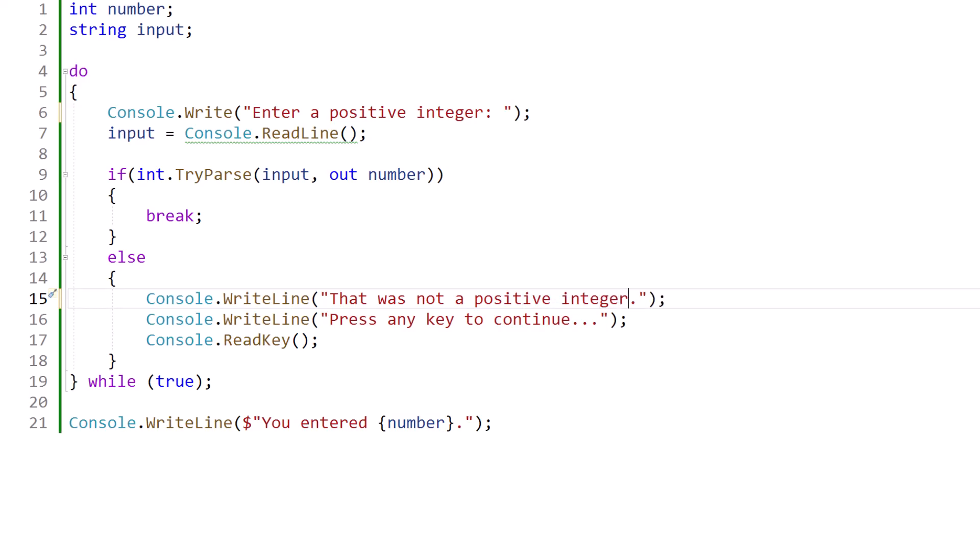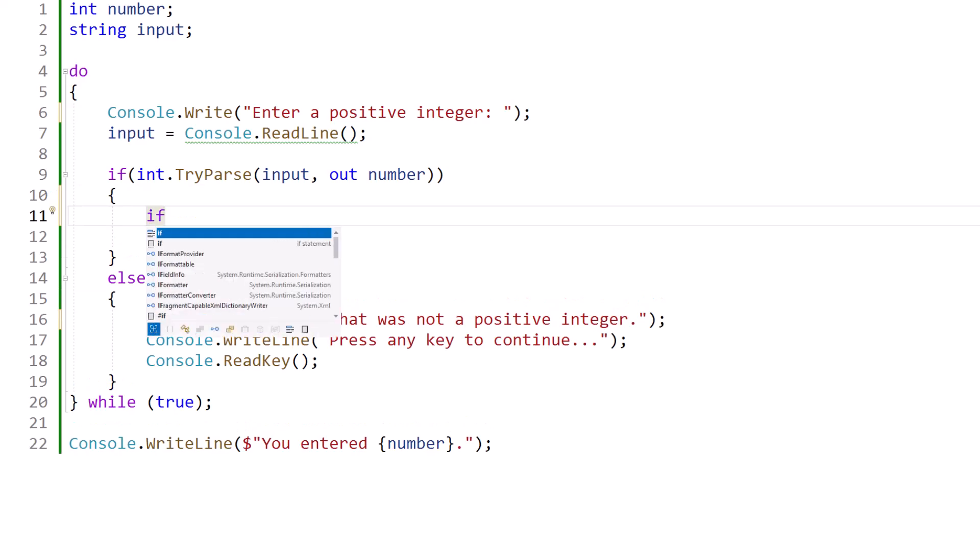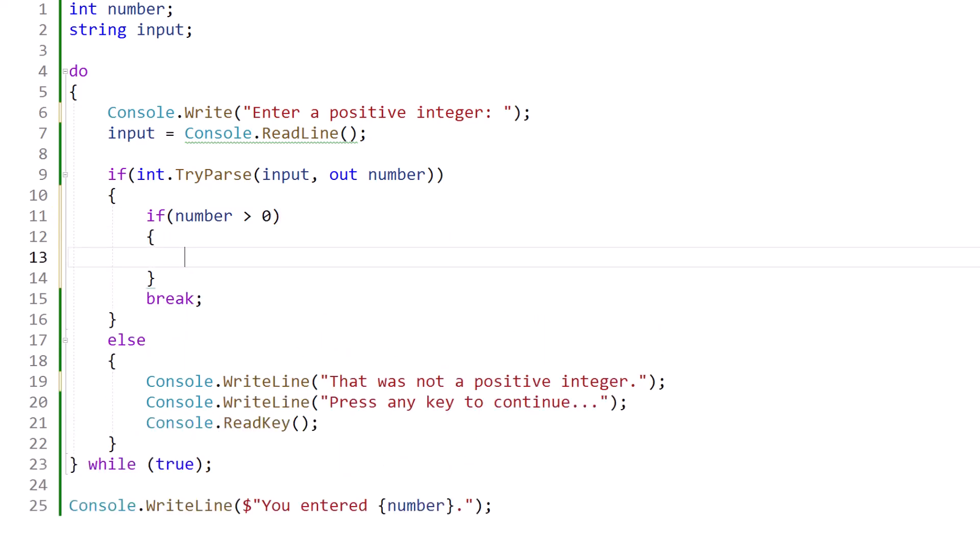Now here, the first check is whether or not it's an integer at all. And then within this, I can put another if statement. If it is an integer, then if the number is greater than zero, we're happy.